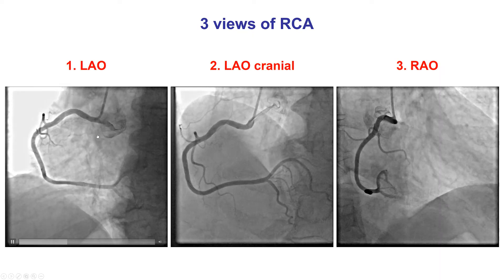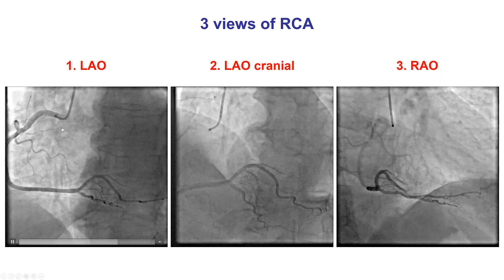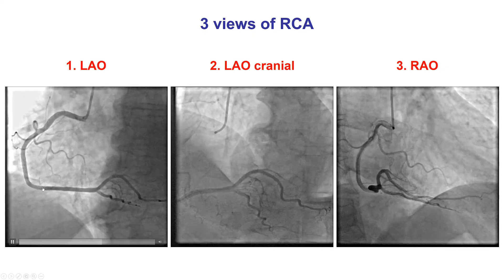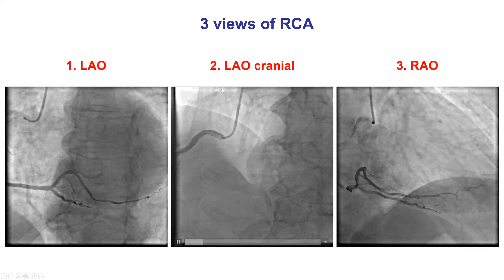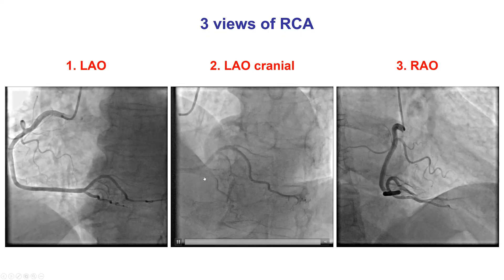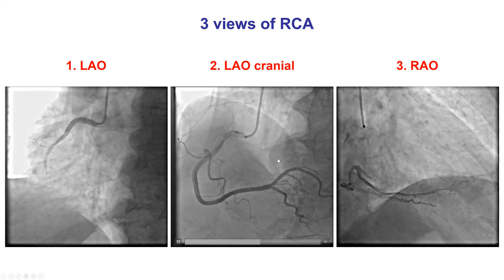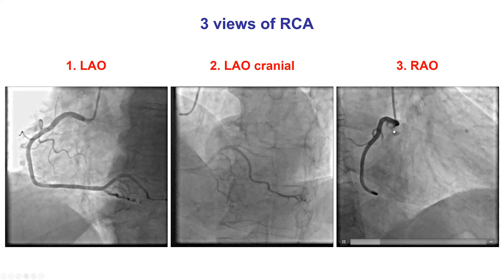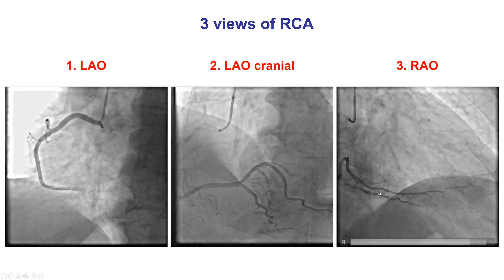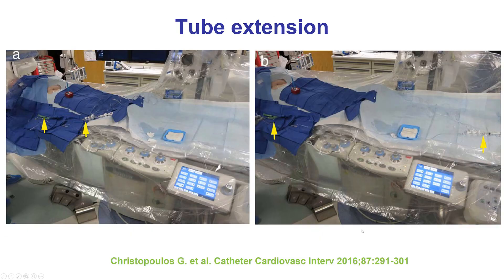When it comes to the right, there are three common projections. The first is the standard LAO, which is very good for visualizing the proximal, middle, and distal RCA. Then the LAO cranial, which provides good visualization of the distal RCA, PDA, and posterolateral bifurcation. And finally, the RAO, which is great for the mid portion of the RCA as well as the PDA and the posterolateral vessel. There is a separate video that will discuss the projections and interpretation for each artery in more detail.